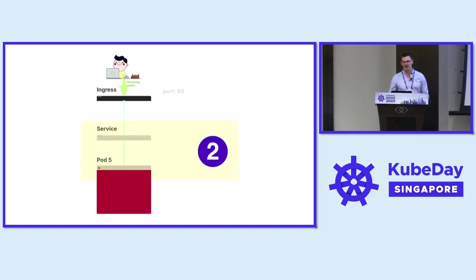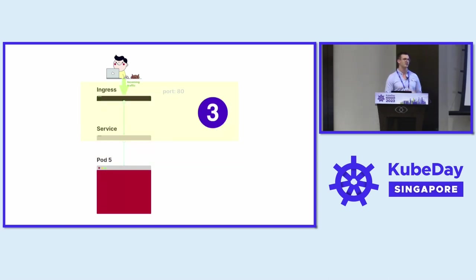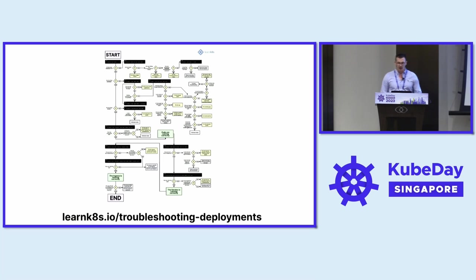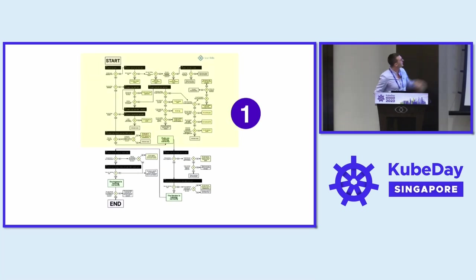What could possibly go wrong? Well, a lot of things could go wrong in this process, and it's generally hard to debug where the problem came from. The model for thinking about this is: start from the bottom. Check that your application is running, then look at the interaction between services — the internal load balancers — and the pods, and then if that's working, figure out why the ingress isn't routing traffic from the top.